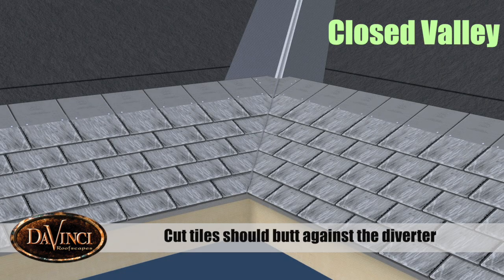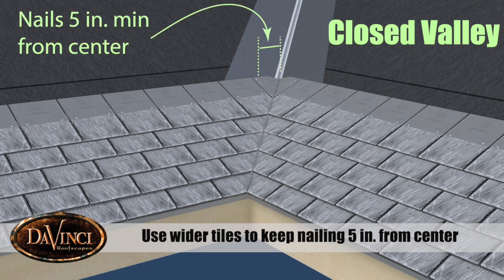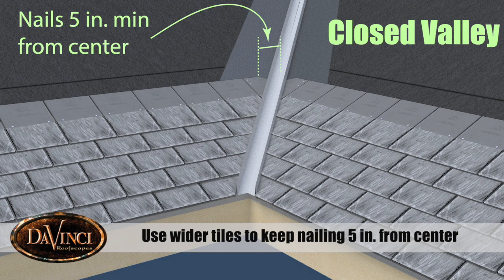Cut tiles should butt against the center diverter for a closed valley. Wider tiles should be used as valley cuts to keep nailing at least 5 inches from the center.